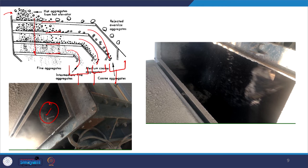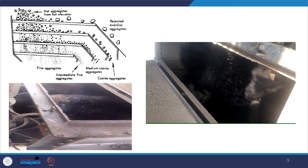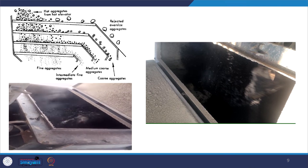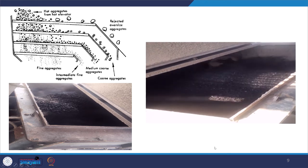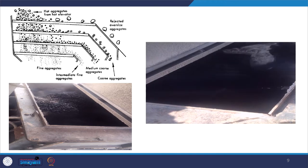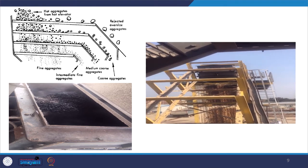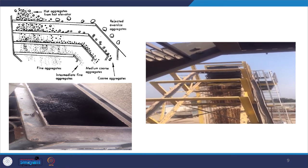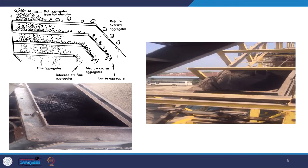Here is a video to visually explain what happens inside the pug mill. You can see how the aggregates are moving inside and being mixed with bitumen. Initially it will appear dry, but after a few seconds you can see a very smooth, uniformly black mixture. After mixing, the mixture is finally discharged and sent to the storage silo. The pug mill gate opens, discharges all material, and then comes back again to collect further material.